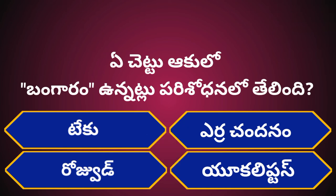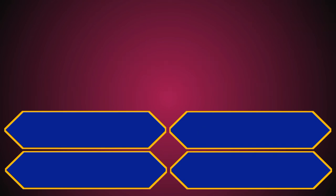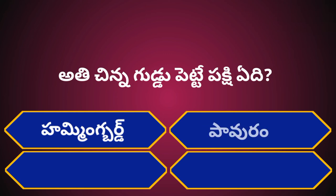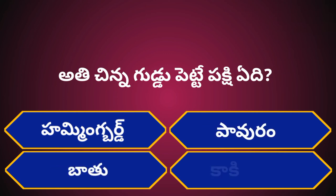Correct answer is D. Eucalyptus. Question number 9. Options: A. Hummingbird, B. Power, C. Batu, D. Kaki. Your time starts now.